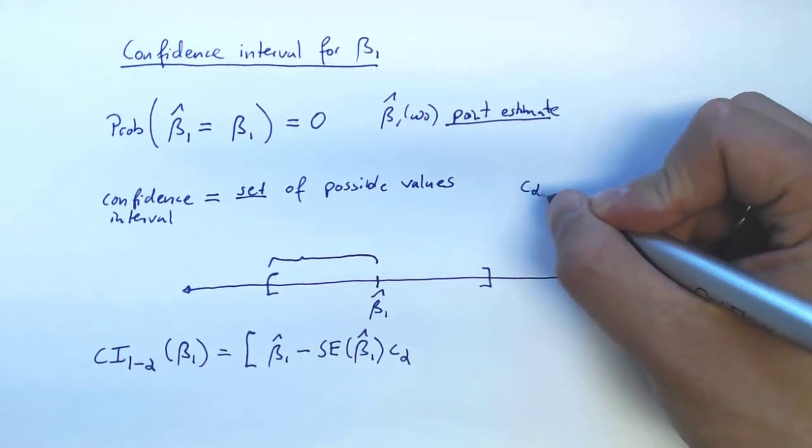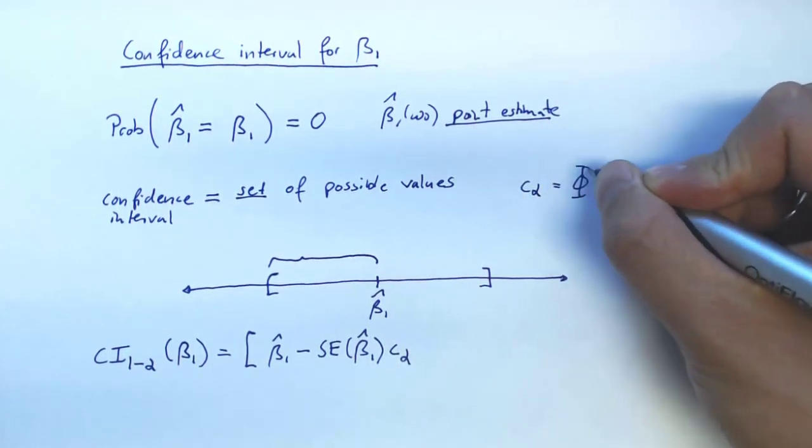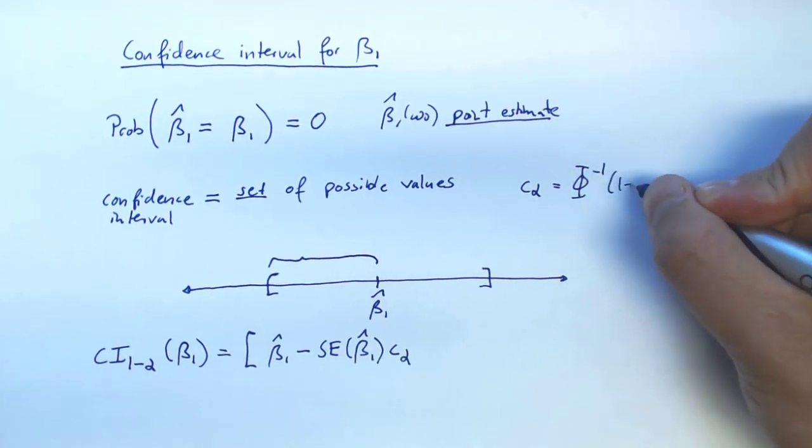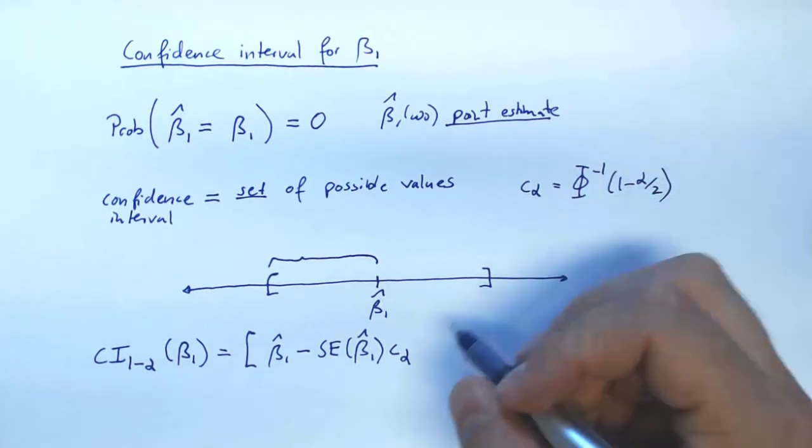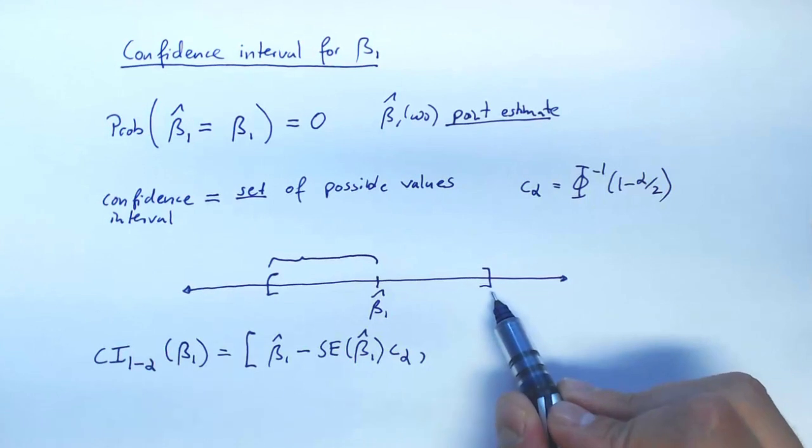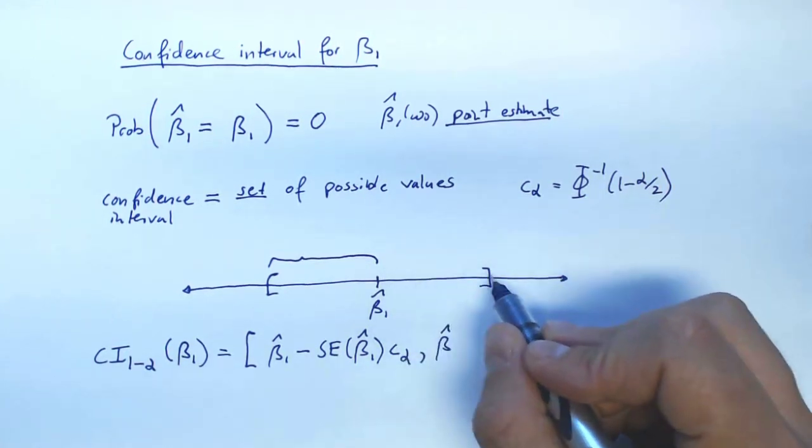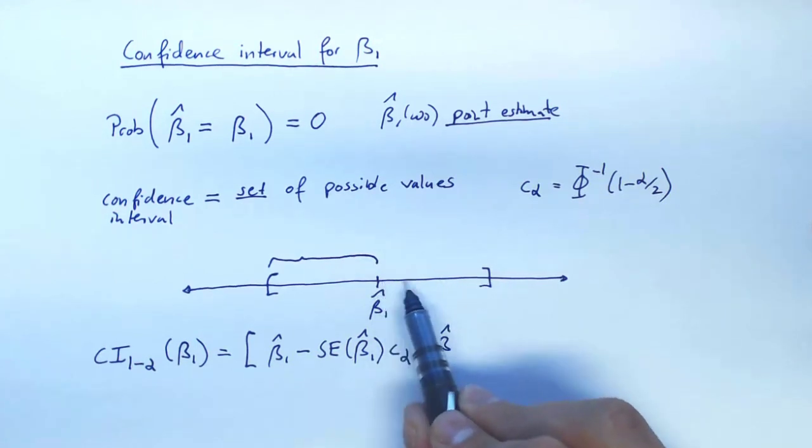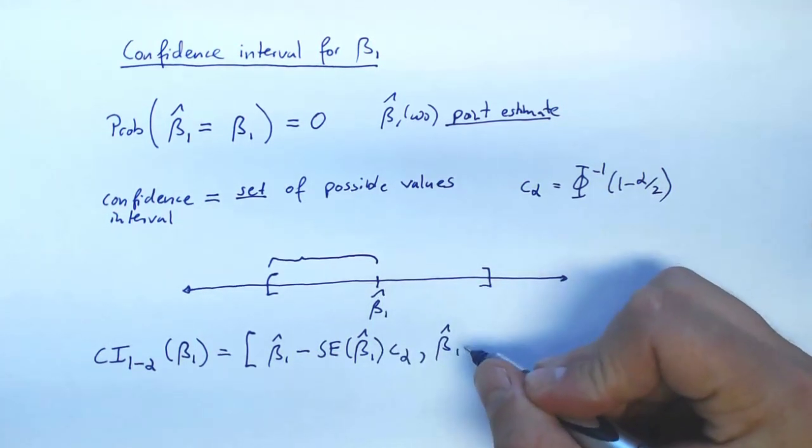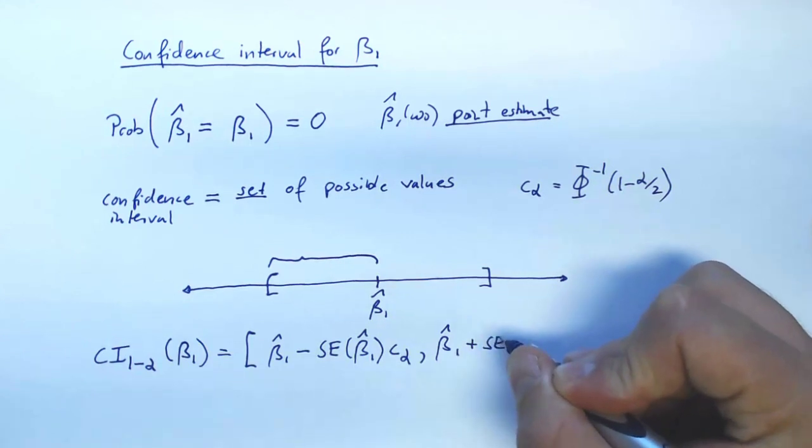And C alpha as before is this quantile. And the upper bound here of the interval will have the same distance from the center. So now we're adding this.